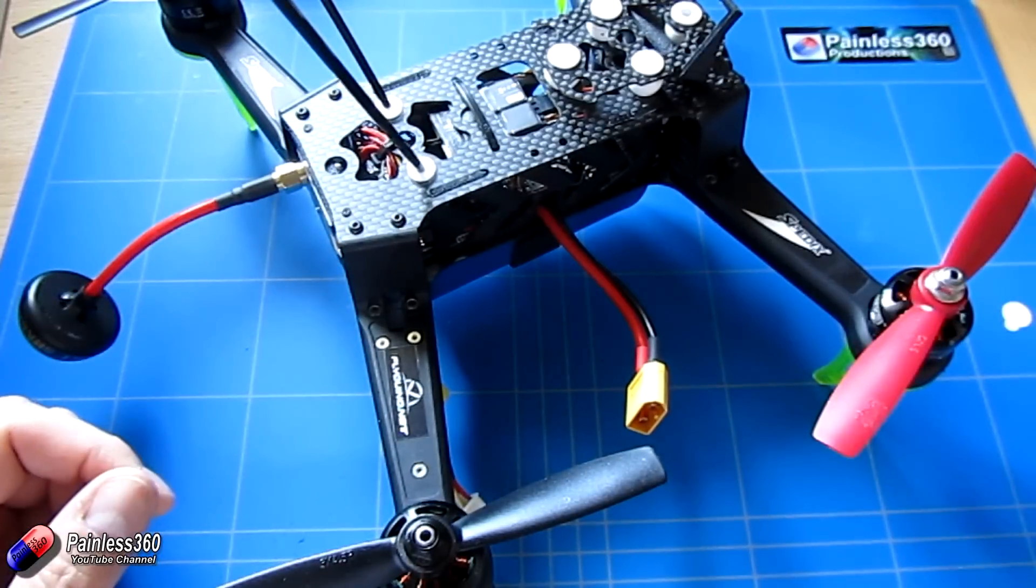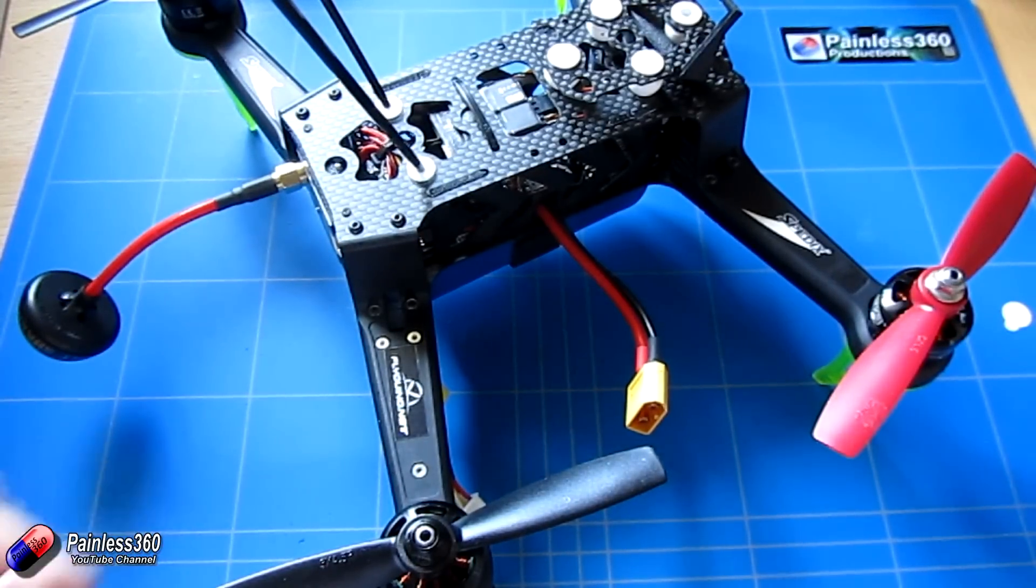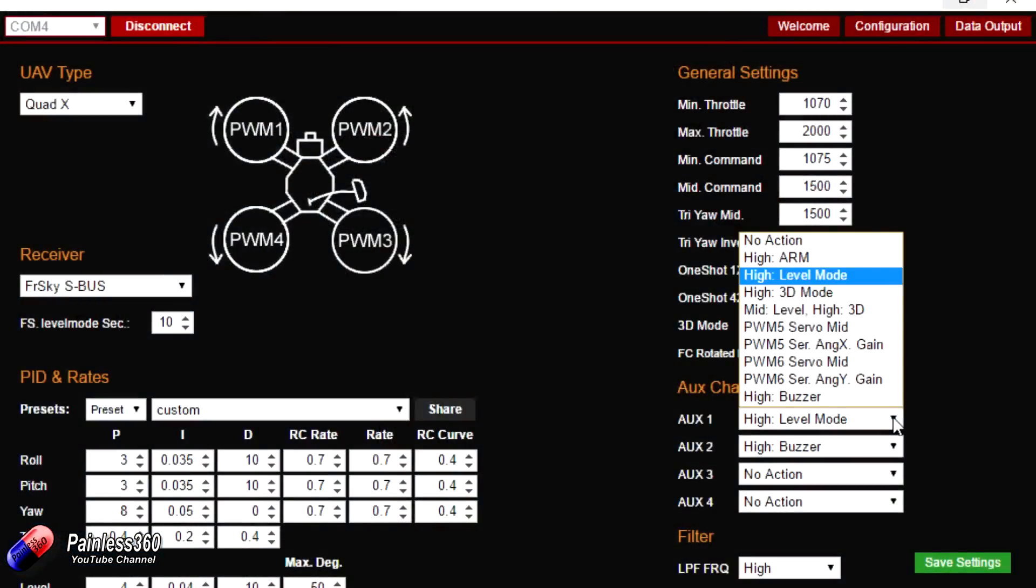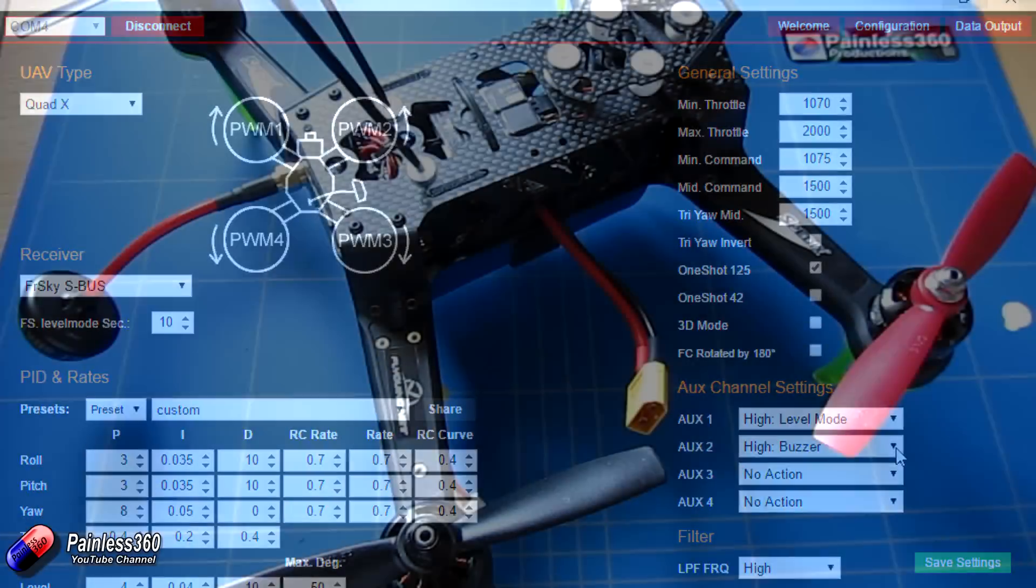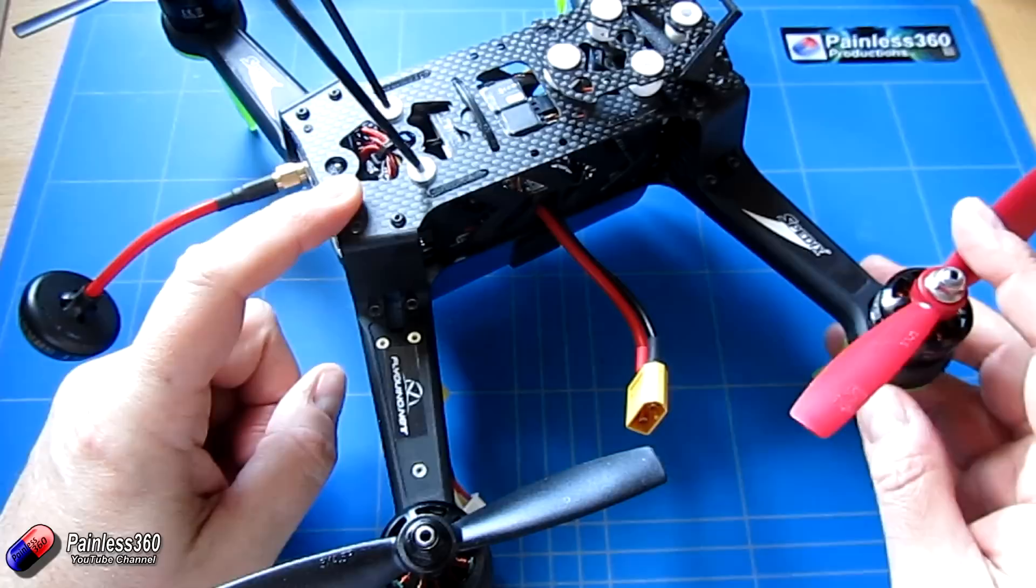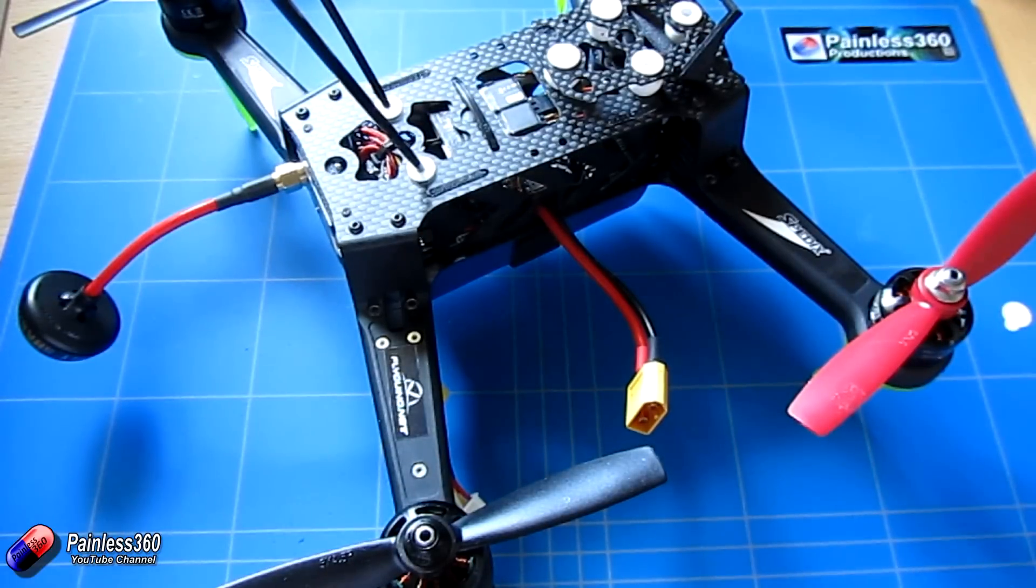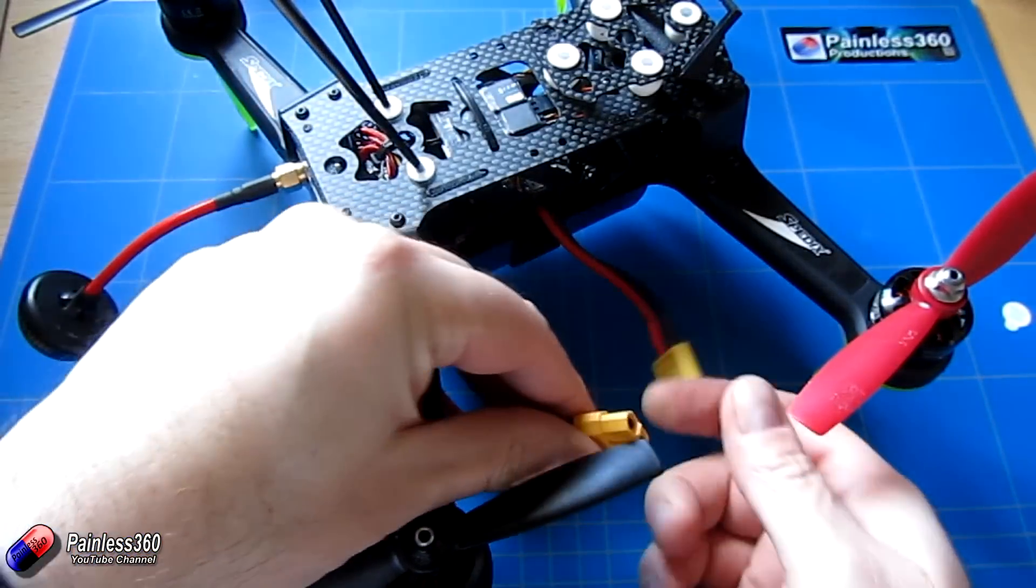So now the machine is back together. The next thing we need to do then is connect it up to the PC. We need to go into the graphical user interface and here on the right hand side we can select what auxiliary 2 does. And we're going to select it so that when it goes high it is going to sound the buzzer. So I now have that set up on my radio. So I have a switch that controls auxiliary 2. So when I flick that switch I should be able to hear the buzzer sound. So let's plug it all in and test it works.